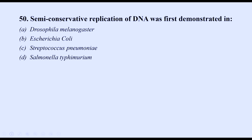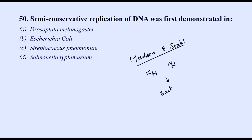Semi-conservative replication of DNA was first demonstrated by Meselson and Stahl. They used isotopes N15 (heavy) and N14 in the bacteria E. coli. The correct option is B.